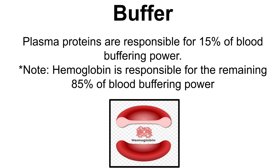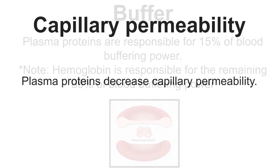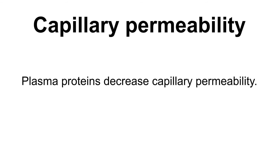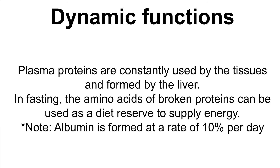Then we have buffer. Plasma proteins are responsible for 15% of blood buffering power. Quick note: hemoglobin is responsible for the remaining 85% of blood buffering power. Next, capillary permeability — plasma proteins decrease capillary permeability. Finally, dynamic functions: plasma proteins are constantly used by the tissues and formed by the liver. Remember, these are dynamic structures.